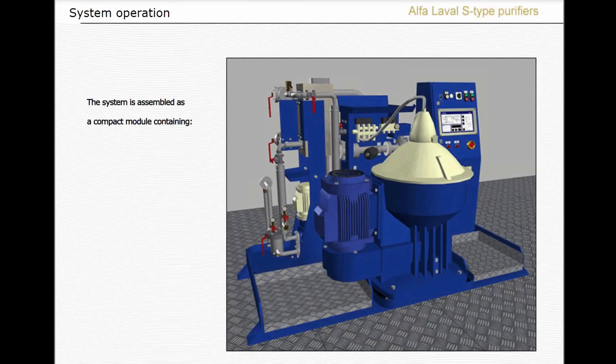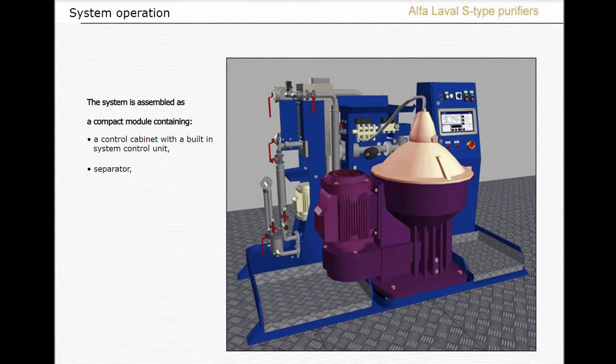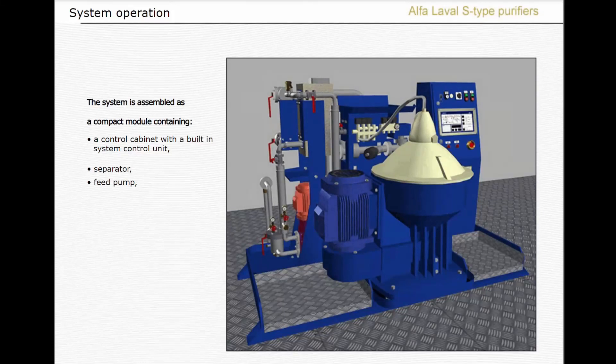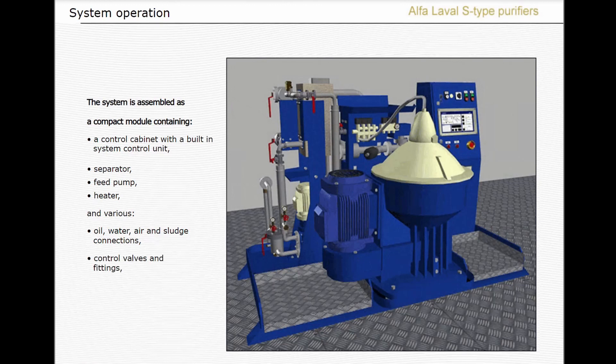The system is assembled as a compact module containing a control cabinet with a built-in system control unit, separator, feed pump, heater, and various oil, water, air, and sludge connections, control valves and fittings, and measurement equipment.